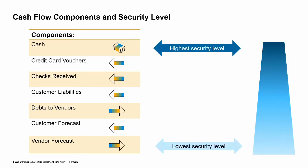A security level is the level of probability that the transaction will turn to cash, incoming and outgoing. The probability that a cash flow transaction can be expected varies considerably. For this reason, each component balance has a different security level. The cash flow components are ordered by security levels. The most certain transactions are derived from cash accounts, such as bank accounts.